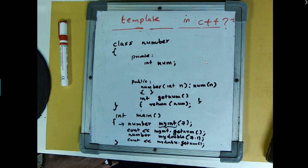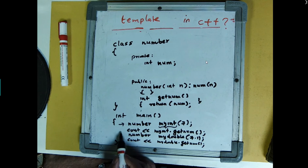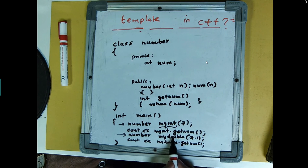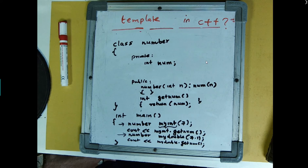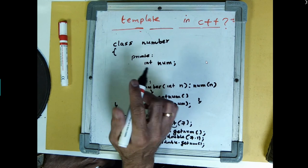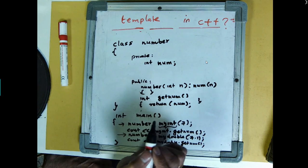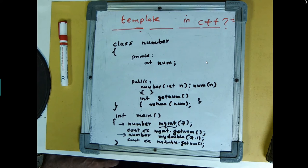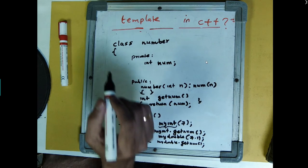So if I have to create a class which will work for both these types, that means sometimes it has to work as integer, sometimes it has to work as double, what you need to do is you have to create a general purpose class program which would look like this.